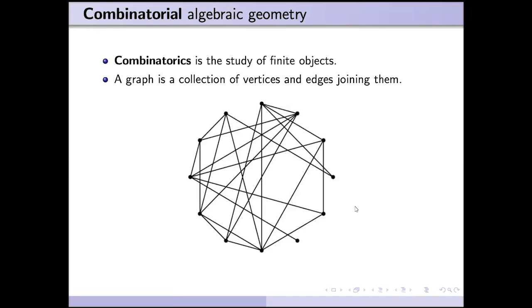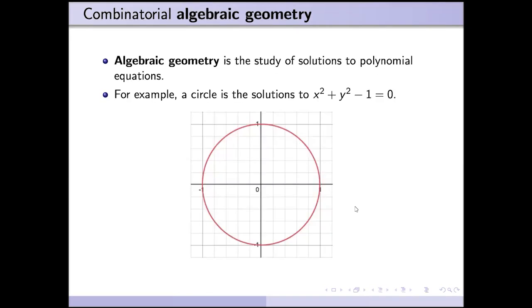Combinatorics tends to be very concrete. Algebraic geometry is the study of solutions to polynomial equations. So for example, x squared plus y squared minus one is a polynomial, and if you set it equal to zero, you get a circle, which is a nice shape.